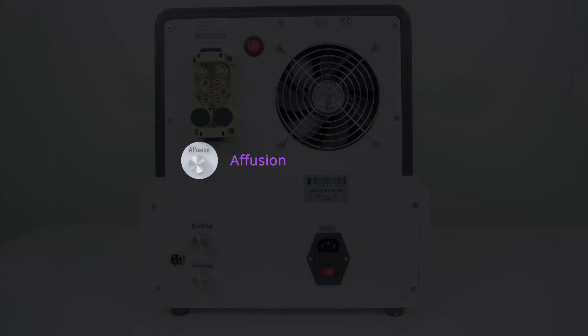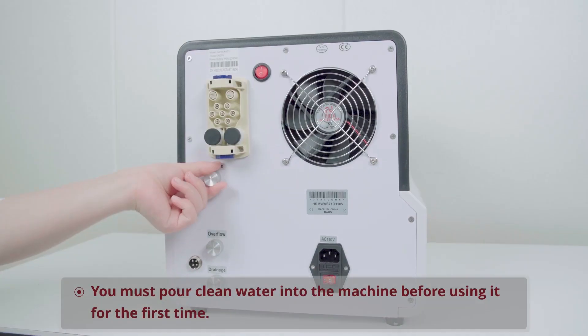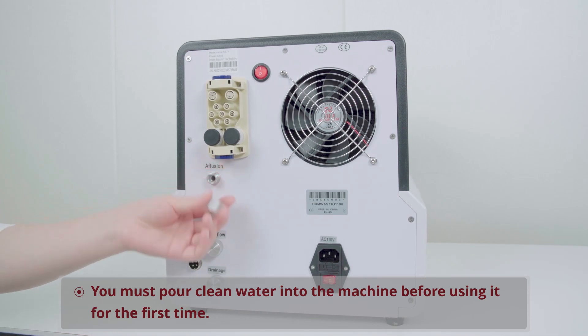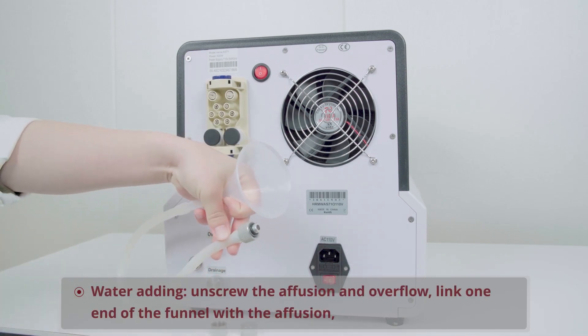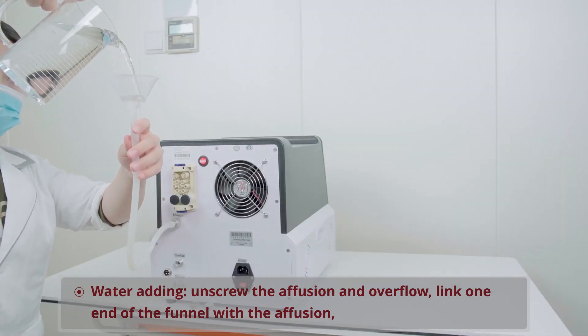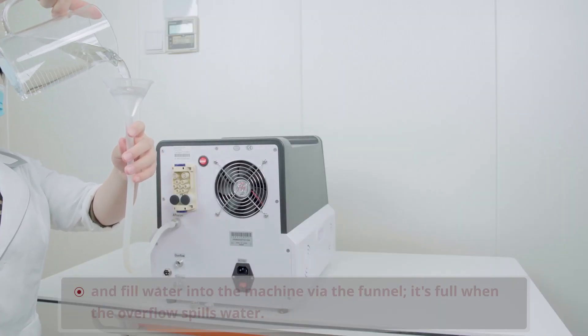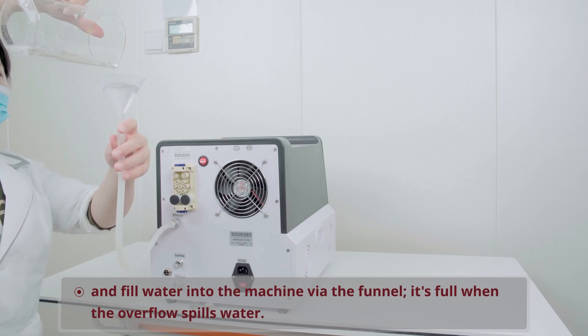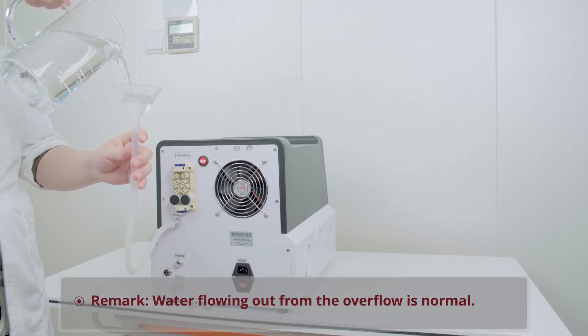From top to bottom: effusion, overflow, and drainage. You must pour clean water into the machine before using it for the first time. Water adding: unscrew the effusion and overflow, link one end of the funnel with the effusion, and fill water into the machine via the funnel. It's full when the overflow spills water. Remark: water flowing out from the overflow is normal.